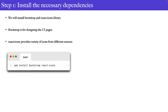The first step is to install the necessary dependencies — the Bootstrap dependency and the React Icons library. Bootstrap is used to design the UI pages, and React Icons provides a variety of icons from different sources including Font Awesome, Material Design icons, and Bootstrap icons. To install these, we execute the command `npm install bootstrap react-icons` from the root of our project. It will install the necessary files and register them in the package.json file.